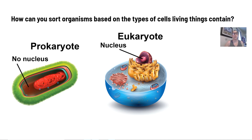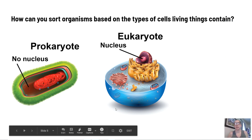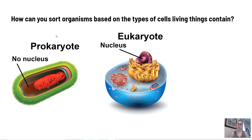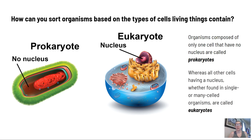How can you sort organisms based on the types of cells living things contain? Well, we have either a prokaryote or a eukaryote. The biggest difference is a prokaryote has no nucleus, whereas the eukaryote does have a nucleus. Organisms composed of one cell that have no nucleus are called prokaryotes, whereas all other cells having a nucleus — whether found in a single or multi-celled organism — we call a eukaryote.